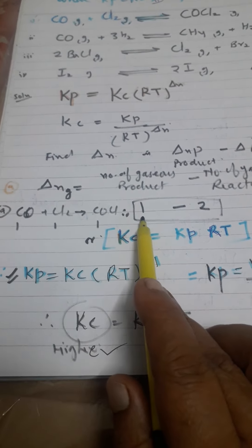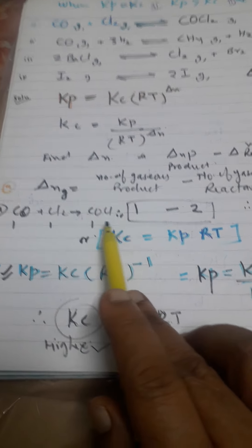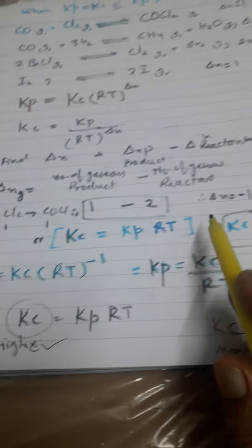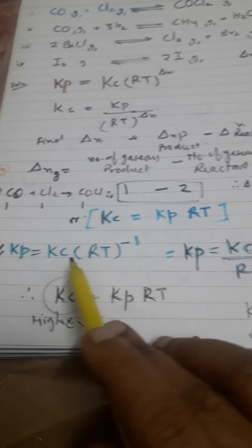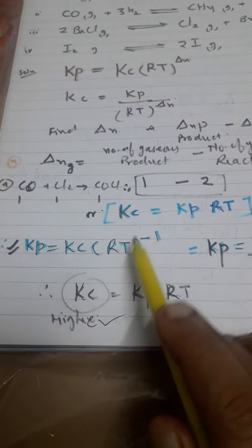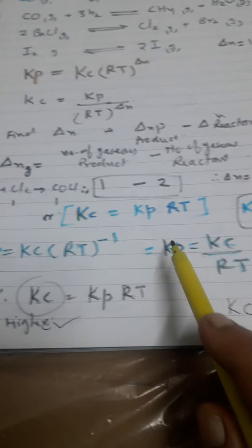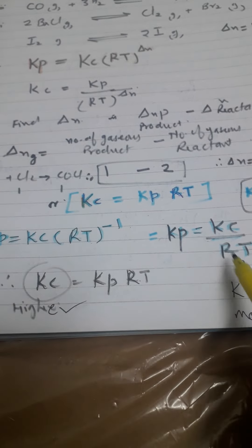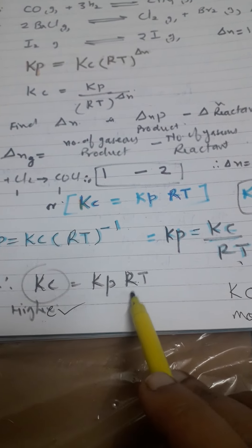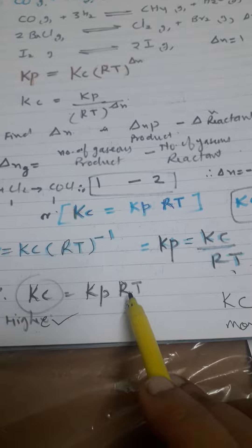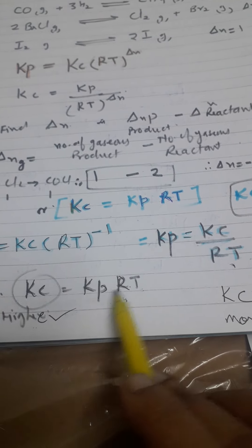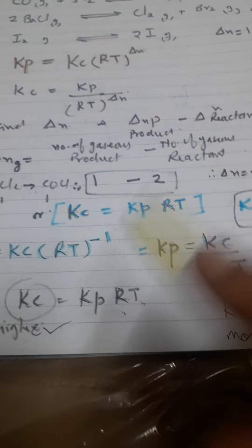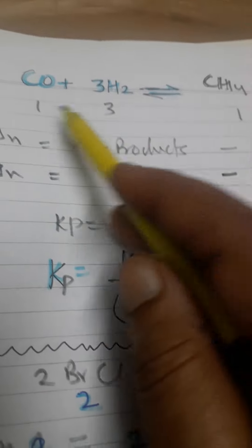For the first reaction, products minus reactants gives 1 minus 2, so ΔN = -1. Therefore Kp = Kc(RT)^(-1), which we rewrite as Kp = Kc / RT. This means Kc is much higher than Kp, because Kp multiplied by RT gives Kc.